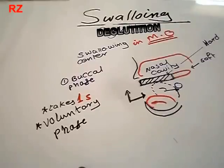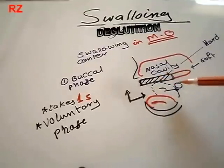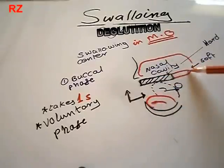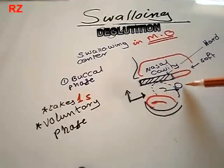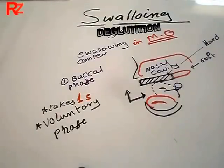What is happening here is that the tongue is moving upward and backward to push the food bolus into the pharynx. The tongue tilts upward, touching the hard palate. This is the soft palate and this is the nasal cavity. The tongue moves upward and backward, pushing the bolus into the pharynx.